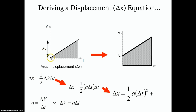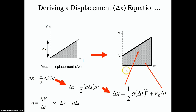This works if and only if the initial velocity of the object is zero. If you're already moving and have an initial velocity, you start from some initial velocity and go to some final velocity. The displacement is not just the area of a triangle — it's the area of a triangle plus an added rectangle. That added term comes from the area of the rectangle, which is the initial velocity multiplied by the change in time. So the complete equation also includes v₀ times t, allowing us to handle any situation whether the object has an initial velocity or not.